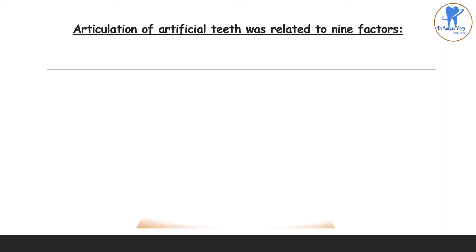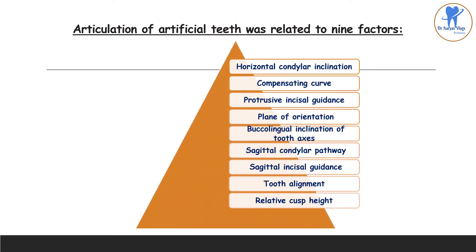The nine factors are: horizontal condylar inclination, compensating curve, retroincisal cadence, plane of orientation, buccolingual inclination of tooth axis, sagittal condylar pathway, sagittal incisal cadence, tooth alignment, and relating cuspids. So these are the nine factors related to the articulation of artificial teeth.